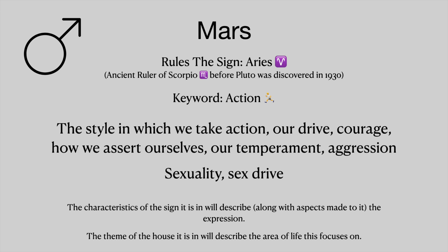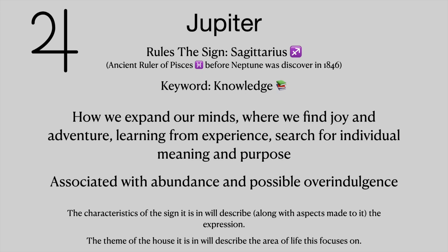Jupiter rules the sign of Sagittarius and was also the ancient ruler of Pisces before Neptune was discovered in 1846. The keyword is knowledge. Jupiter represents how we expand our minds, where we find joy and adventure, where we learn from experience, our search for individual meaning and purpose. This is also associated with abundance and possible overindulgence.